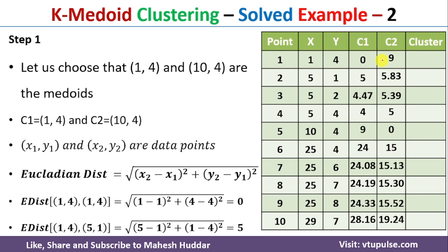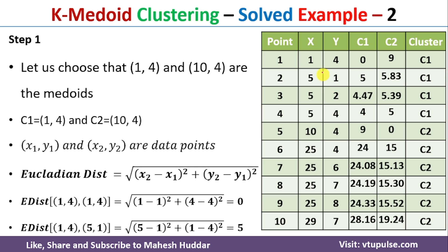After that, we compare the two distances for each data point. For the first data point, the distances from C1 and C2 are compared — 0 is the minimum, so it is assigned to C1. For the second data point, 5 is the minimum, so it is also assigned to C1. After the full first assignment, data points 1, 2, 3, and 4 are assigned to C1, and the remaining data points are assigned to C2.